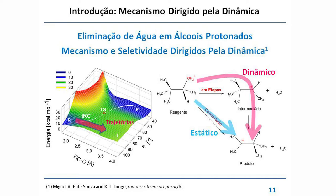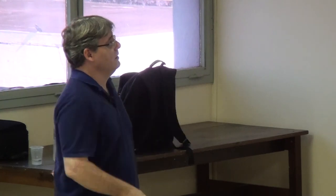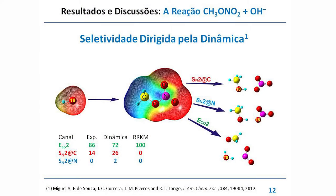O primeiro exemplo que gostaria de mostrar é esse que já mencionei: a seletividade guiada pela dinâmica da colisão entre o nucleófilo e o alquil nitrato — nesse caso, o metil nitrato. Esse trabalho começou como uma colaboração com o grupo do professor Ribeiros e o estudante, que agora já é doutor, o doutor Tiago. Eles estudaram essa reação experimentalmente usando ressonância ciclotrônica de íons acoplada ao espectrômetro de massas — o experimento é muito bonito.